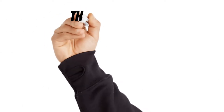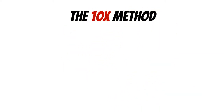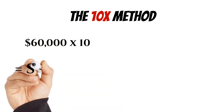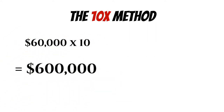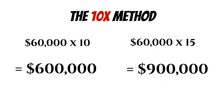The next one is the 10 times method, and this is probably the most simple one. It really just says that if you want to replace income for 10 years, you take the annual income times 10. In this example, $60,000 times 10 equals $600,000 as the death benefit. If you want to replace income for longer — say 15 years — you take that annual income times 15 to get $900,000. This one is really simple; it doesn't take into account things like inflation or a rate of return.